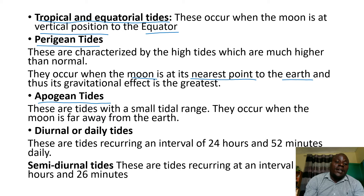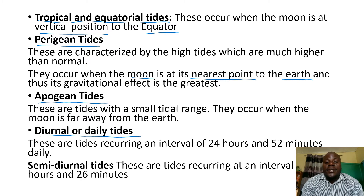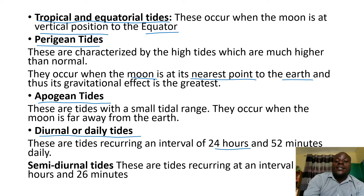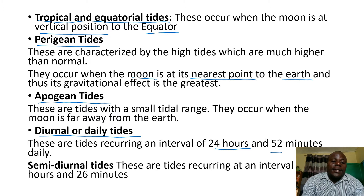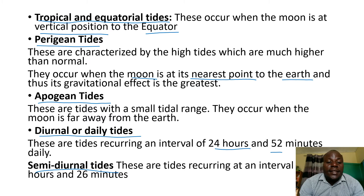We have diurnal or daily tides — these are tides recurring at an interval of 24 hours and 52 minutes daily. Then we have semi-diurnal tides — these are tides recurring at an interval of 12 hours and 26 minutes.